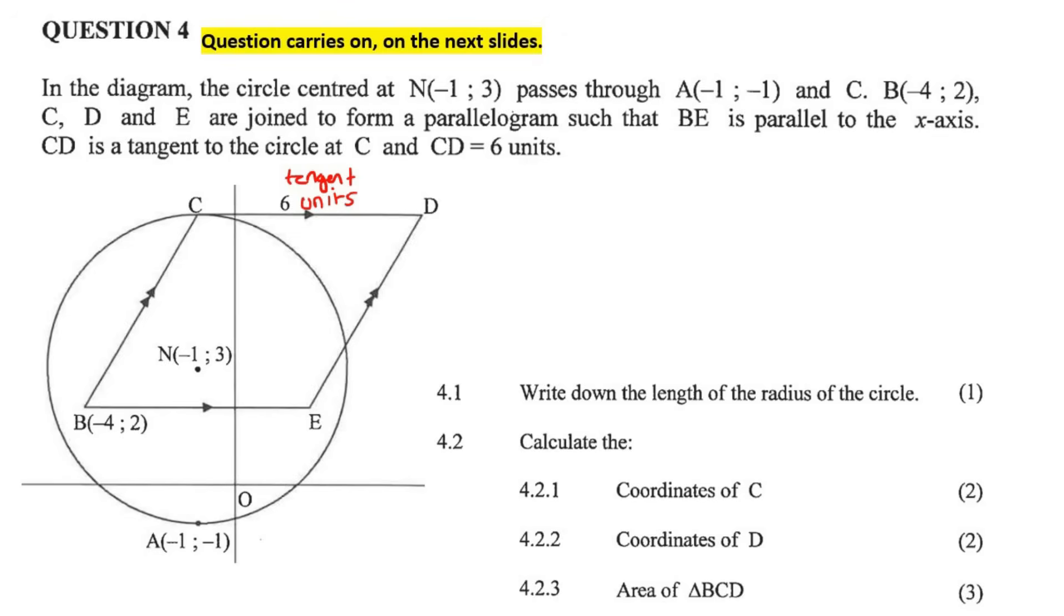It says write down the length of the radius of the circle. So for one mark, some people are thinking distance formula. You could use the distance formula if you wanted to between N and A, but can you see that it's completely vertical? Because look at the x values, they stay the same. So you don't have to use the distance formula, but if you did it would still work out. We can just look by inspection. To go from 3 to minus 1, what is the distance? It's 4. So the radius of the circle is 4.